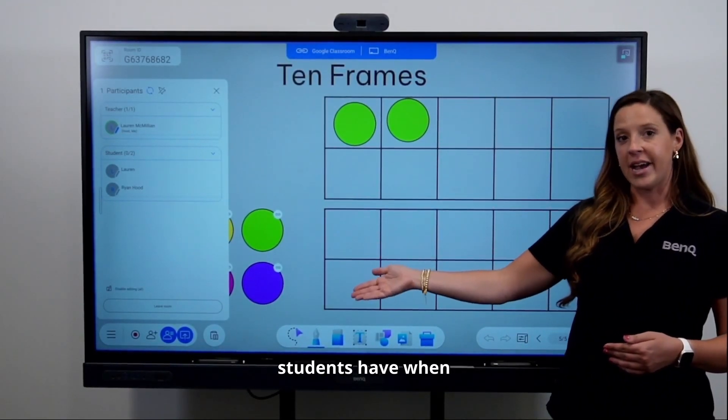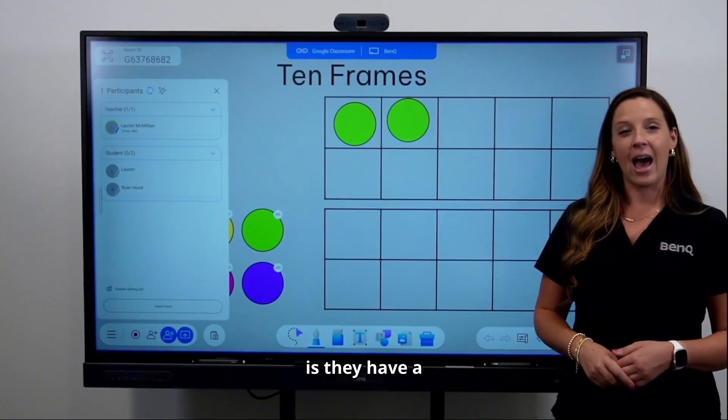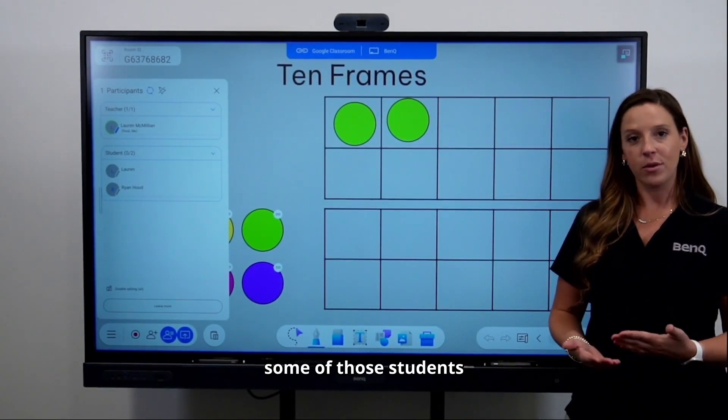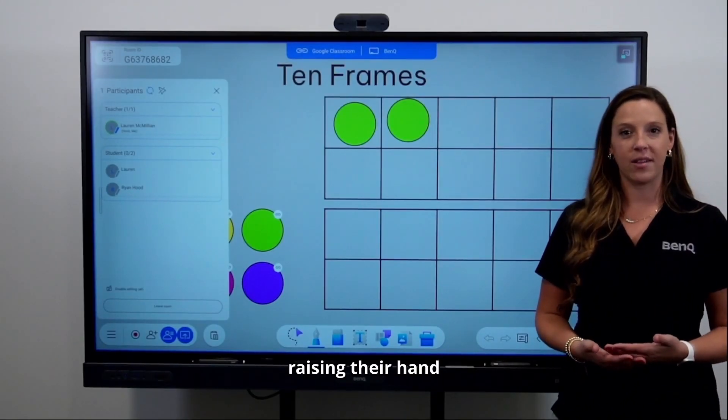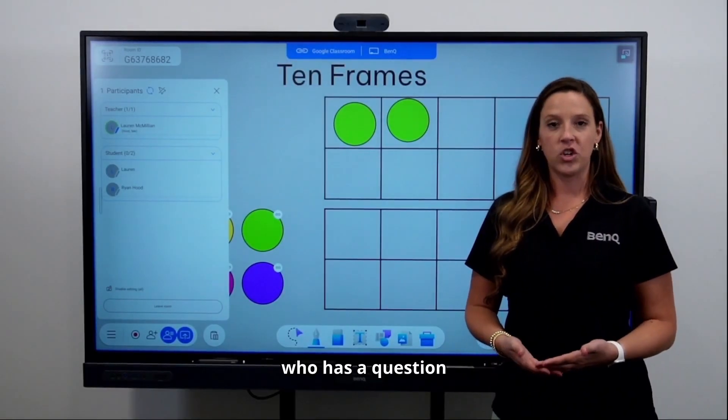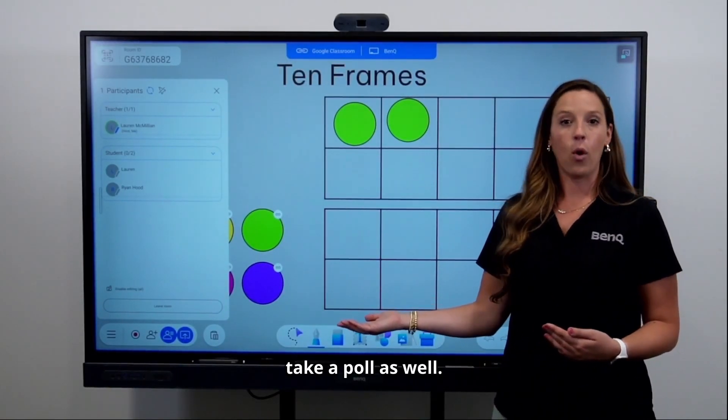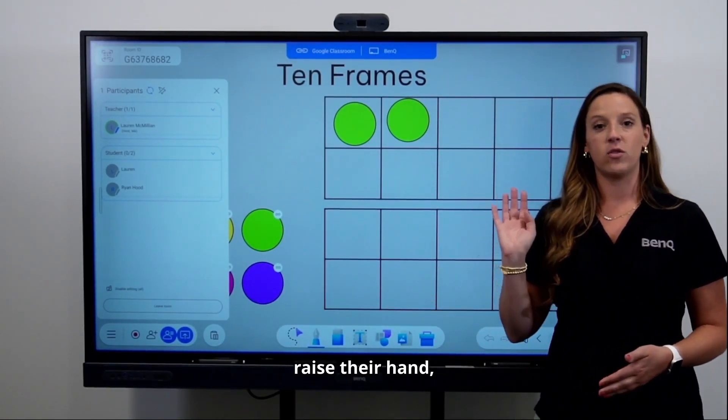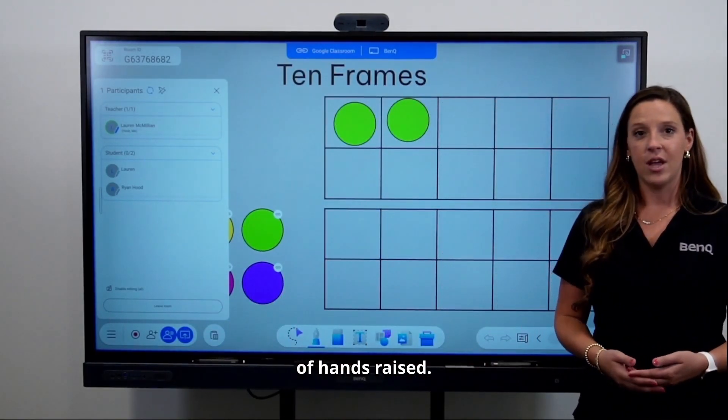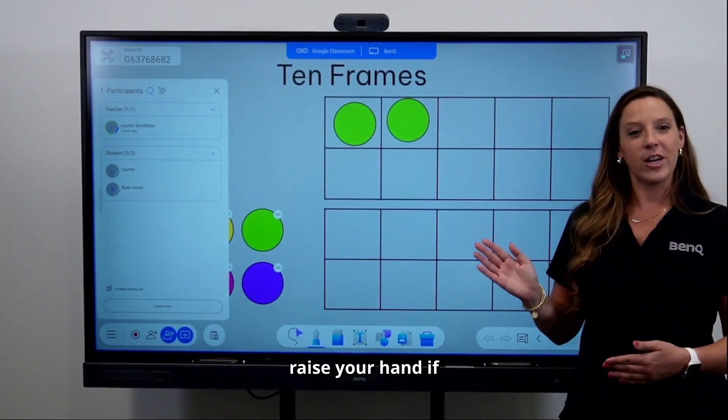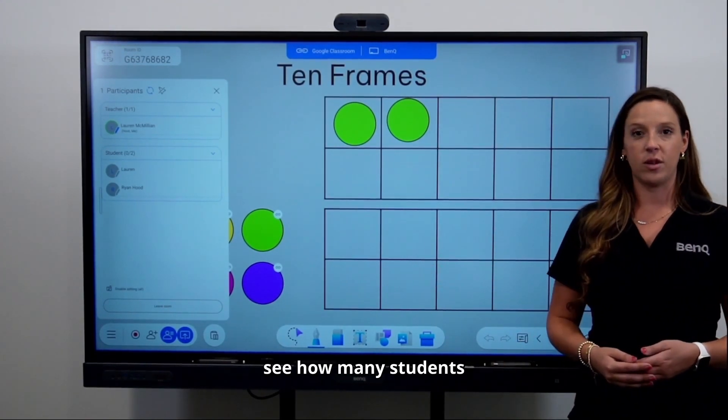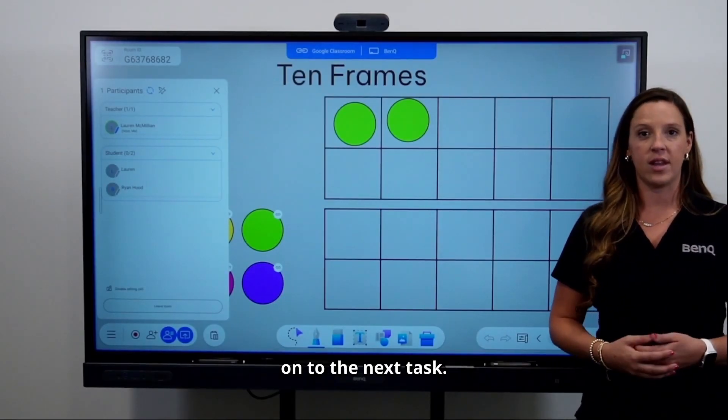An option that the students have when in cloud whiteboard is they have a little feature to raise their hand. This is a great option for some of those students who just don't feel comfortable raising their hand and asking a question out loud. You as the teacher can quickly see who has a question or you can quickly take a poll. Whenever the students raise their hand, a little red bubble will appear with a total number of hands raised.